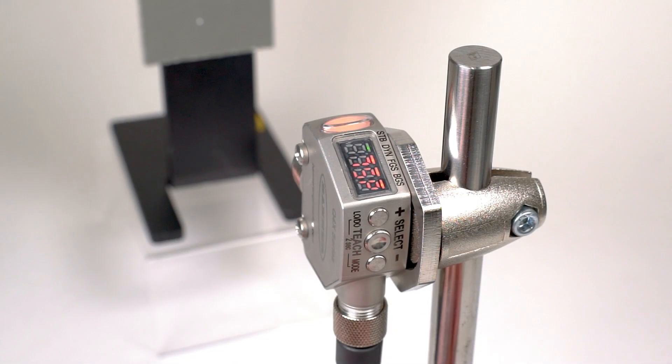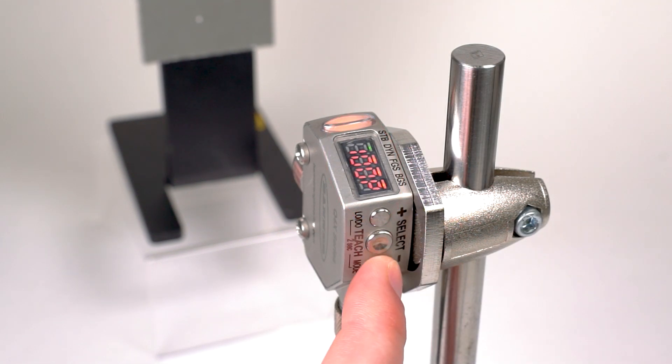The default switching threshold is 75% of the target distance and or intensity. You can change the switching threshold by pressing the plus and minus buttons.